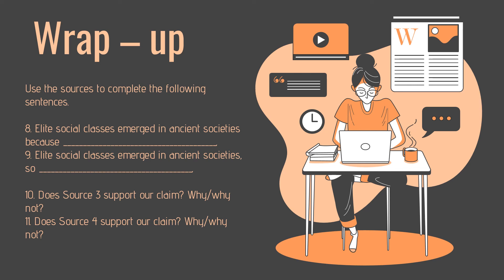And we are already at the wrap-up. Use the sources to complete the following statements of causation: 'Elite social classes emerged in ancient societies because...' — what caused that to happen? And 'Elite social classes emerged in ancient societies so...' — what effect came from that? Lastly, we'll quickly jot down: does Source 3 support or challenge our claim? Does Source 4 support or challenge our claim? That's it — submit these notes on Canvas and have a great rest of your day.